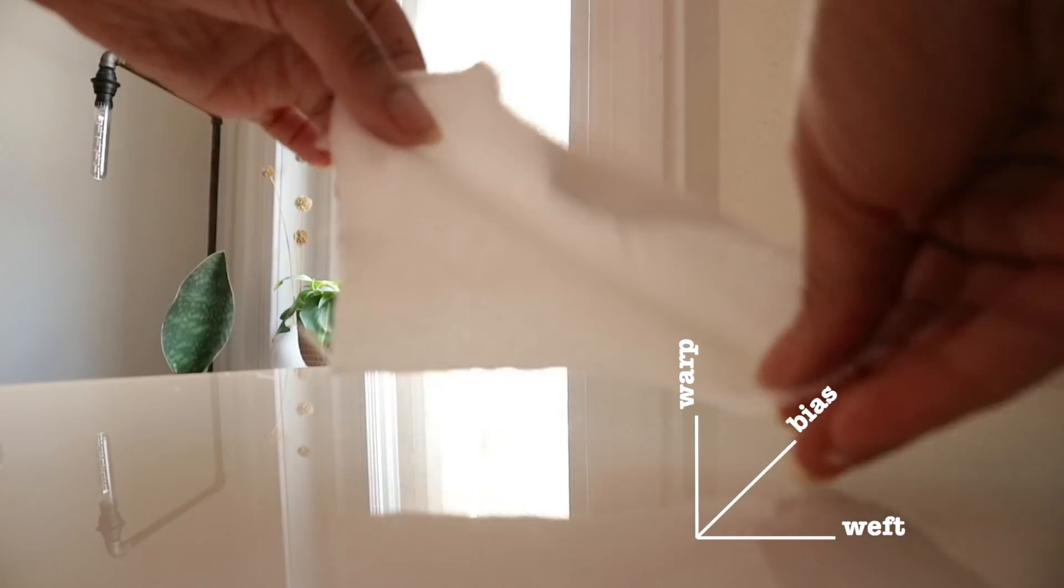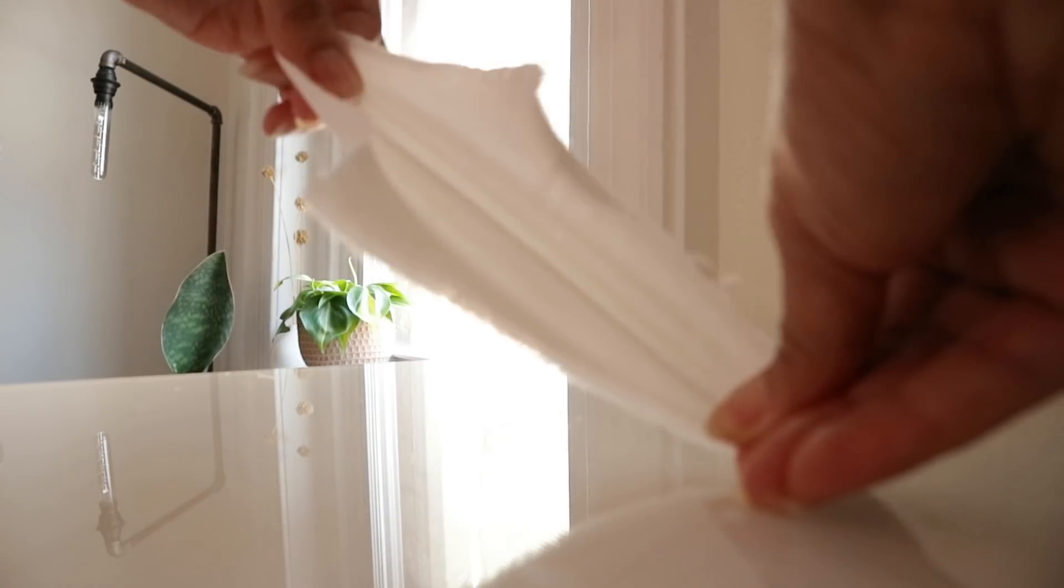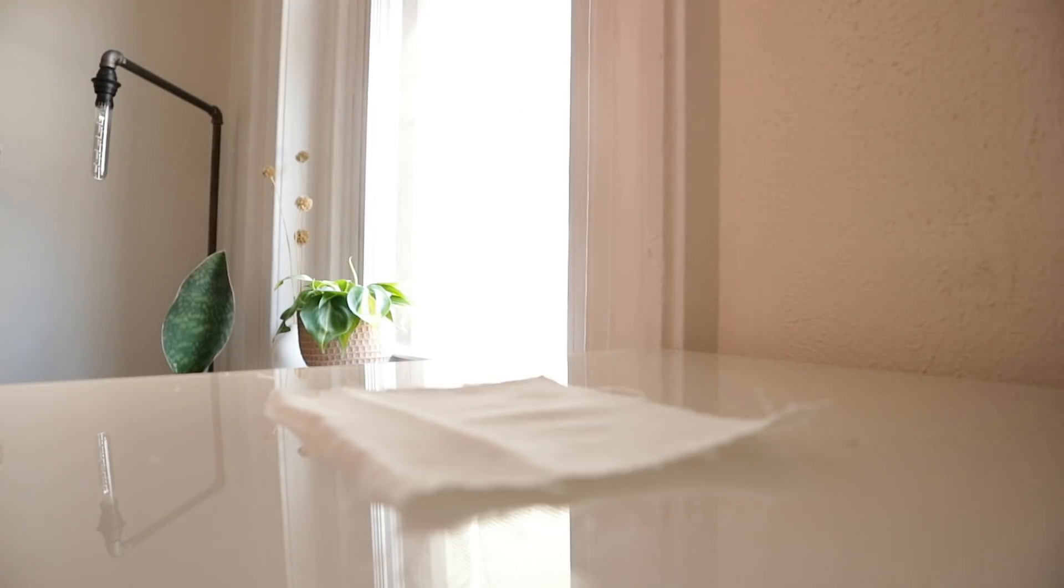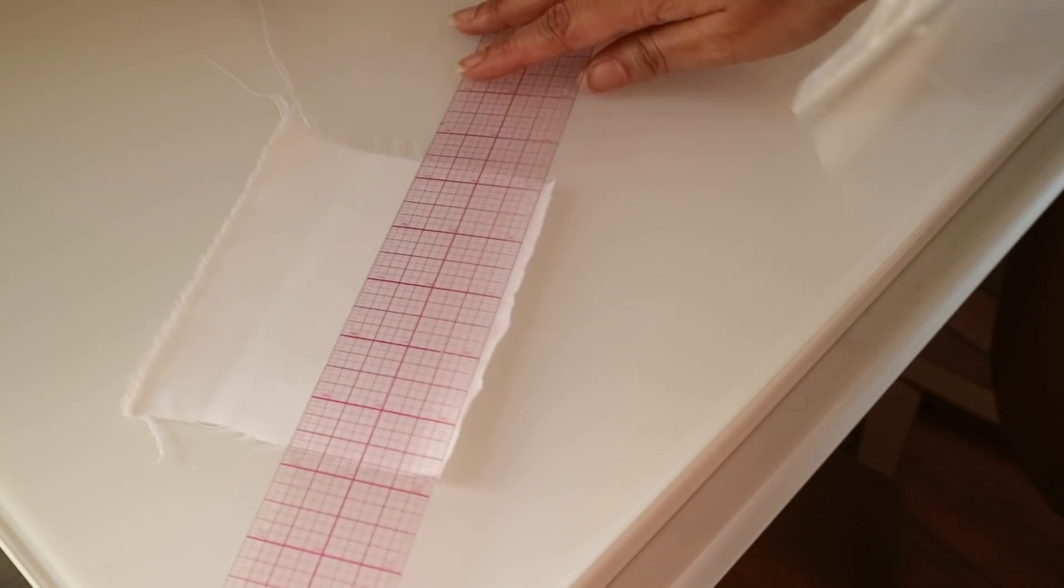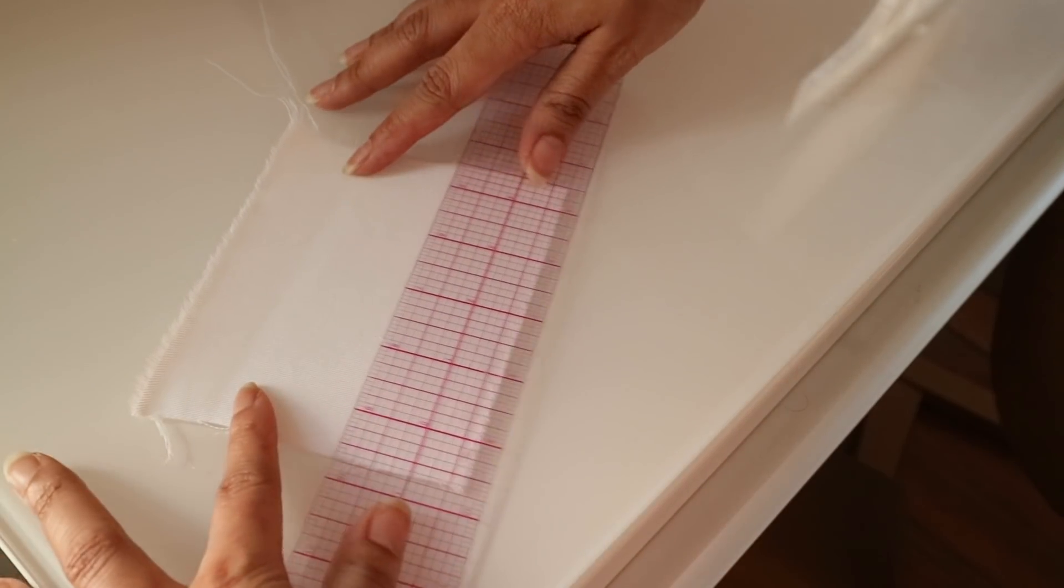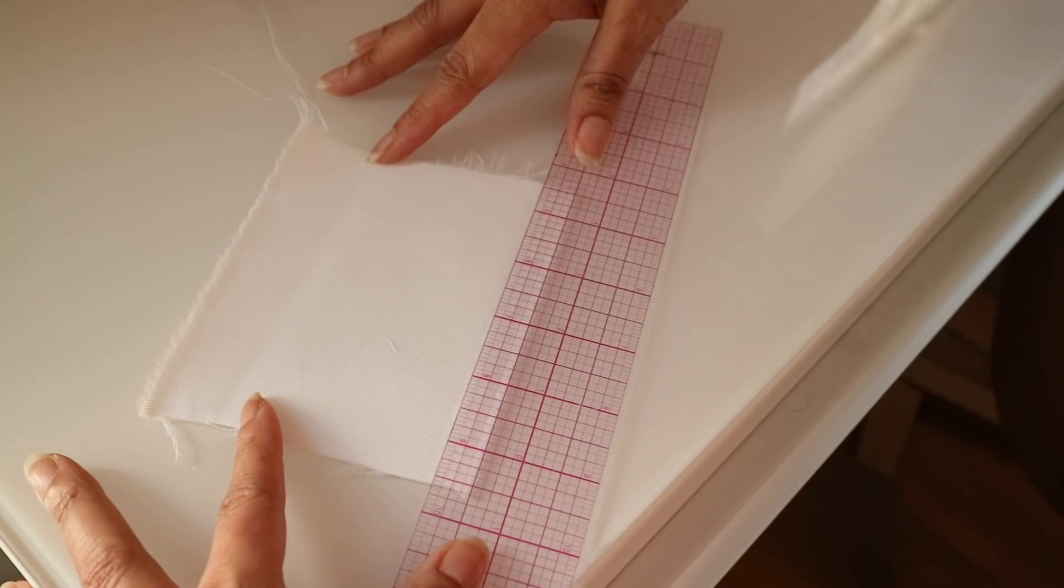However, if you tug it on the diagonal, this is where your stretch is. So long story short, make sure that you're cutting it on the grain, along a straight edge. And the rest we'll get to later. For demonstration purposes, I'm first going to fold back my fabric to create a hem just so that I'm actually sewing two pieces together.